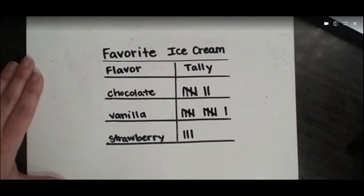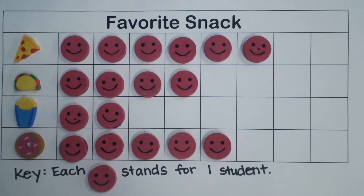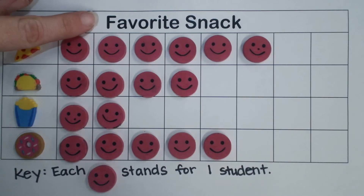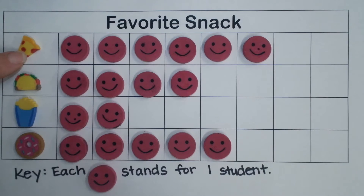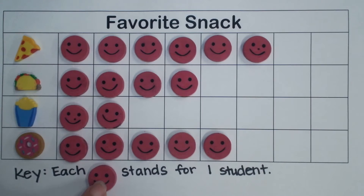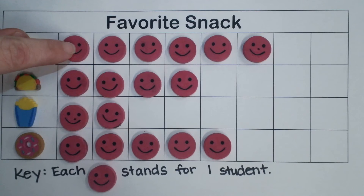Let's do another kind of pictograph. Here we have another pictograph and we have charted favorite snack. A group of kids chose their favorite snack between pizza, tacos, popcorn, and donuts. It's always important to check your key on a pictograph. This key says each smiley face stands for one student, but sometimes you might have a pictograph where the smiley face stands for two or five and you would have to skip count when figuring it out. With this one, each smiley face stands for one student, and we can see that six students chose pizza as their favorite snack.